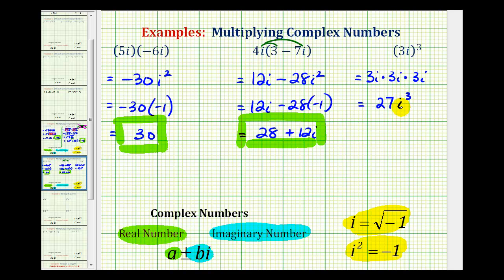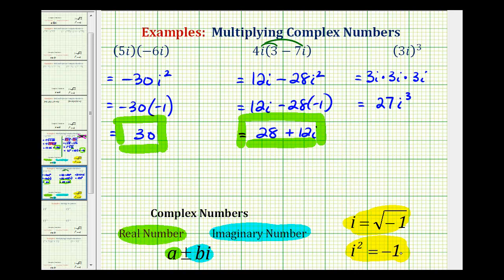But again, it's not in the correct form, because it's not in the form of a complex number. But we do know that i squared is equal to negative 1. So, to simplify this, we could write this as 27 times i squared times i.